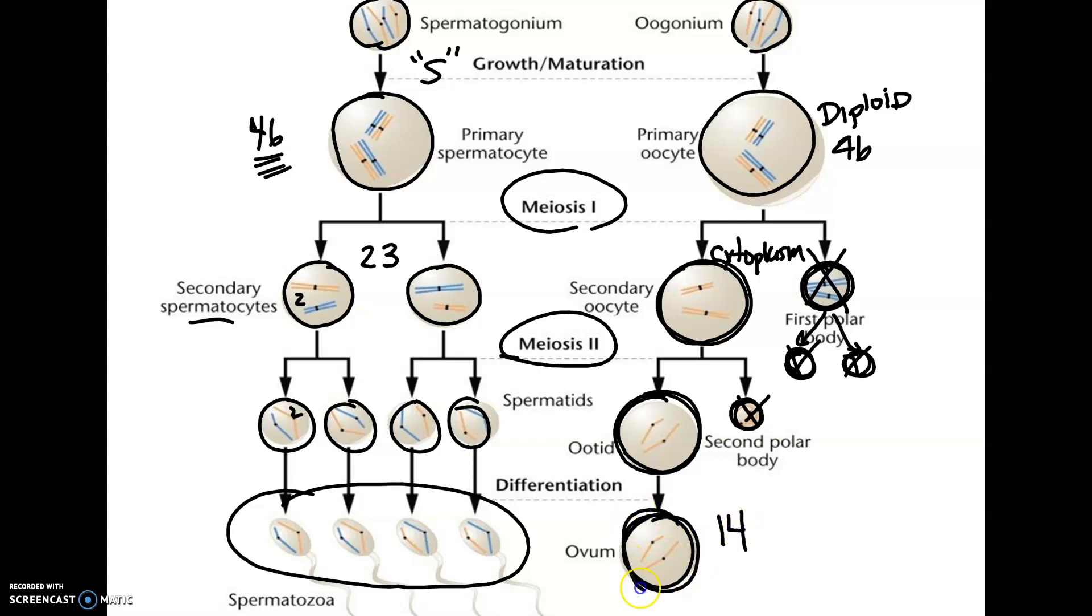And this, on day 14, this ovum, is what is mature and ready to be fertilized by a sperm. The rest disintegrate. And that's why if you've ever seen video of sperm fertilizing an egg, the sperm are very, very tiny. And they're all gathered around this egg because the mitochondria and all the other cell parts are basically provided by the mom, the egg. In fact, mitochondria, you can track mitochondrial DNA maternally back through families.